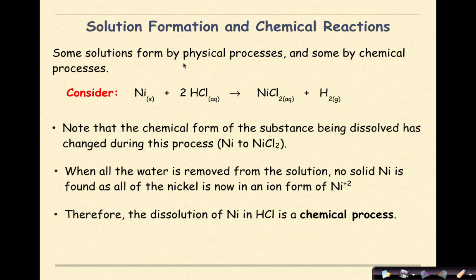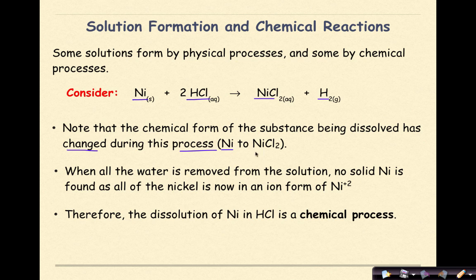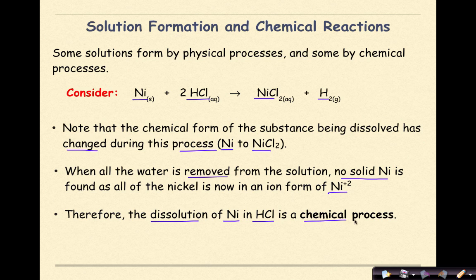Some solutions form by physical processes and others by chemical processes. For example, nickel plus hydrochloric acid gives nickel(II) chloride and hydrogen gas. The chemical formula of the substance being dissolved has changed — solid nickel becomes a solution of nickel(II) chloride. When all the water is removed, no solid nickel is found, as all the nickel is now in ion form as nickel²⁺.